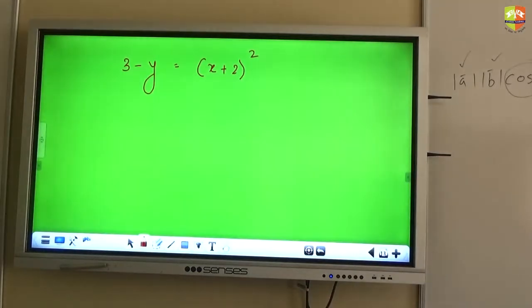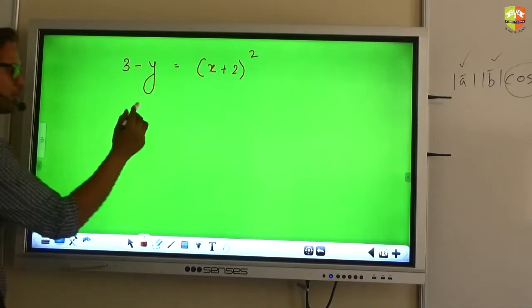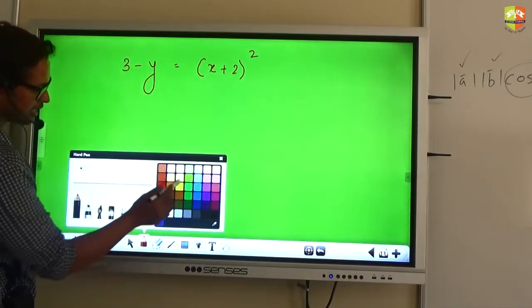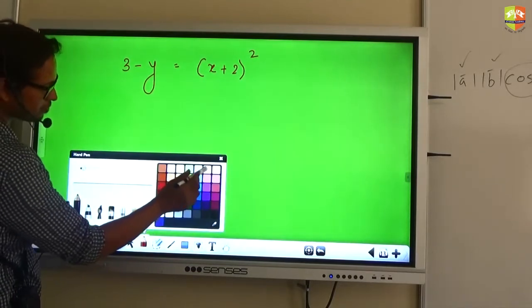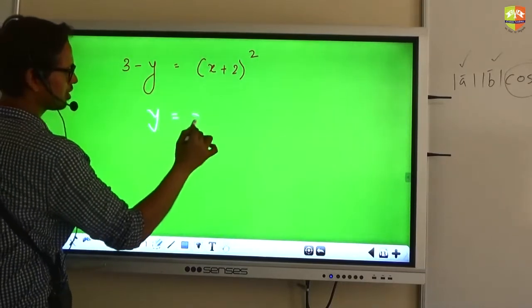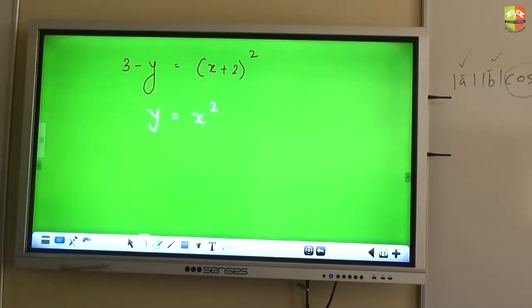Let's go step by step. Can we start? Which is the skeleton graph? Y is equal to X square. I will start with the skeleton graph. Y is equal to X square, correct?